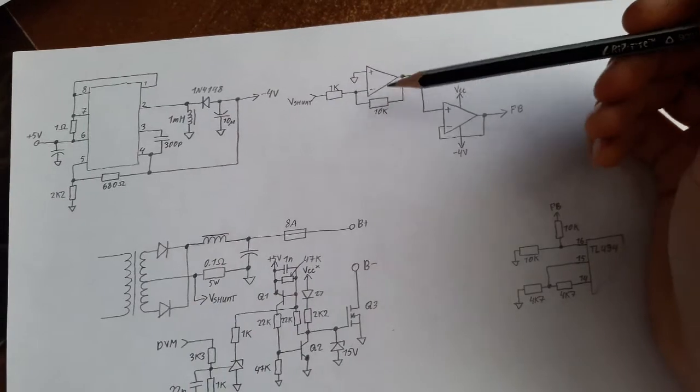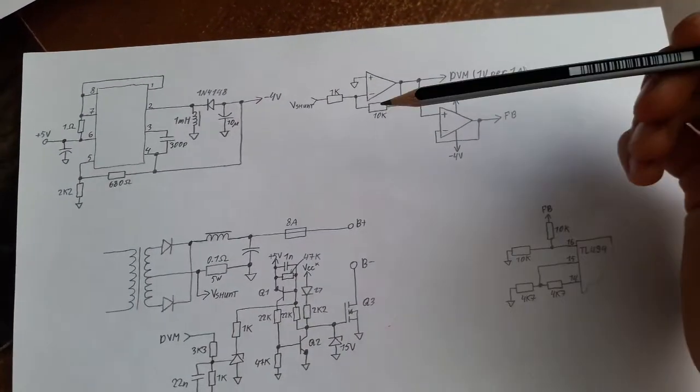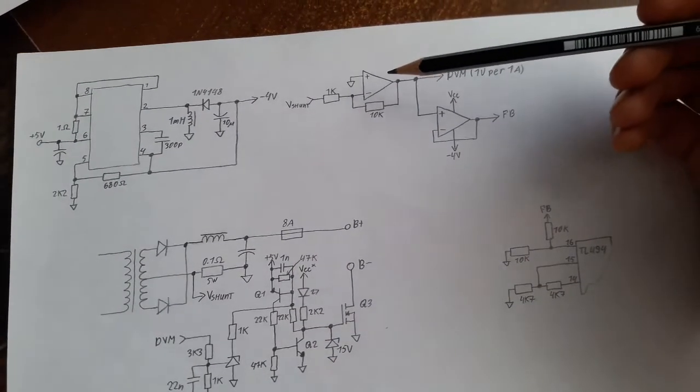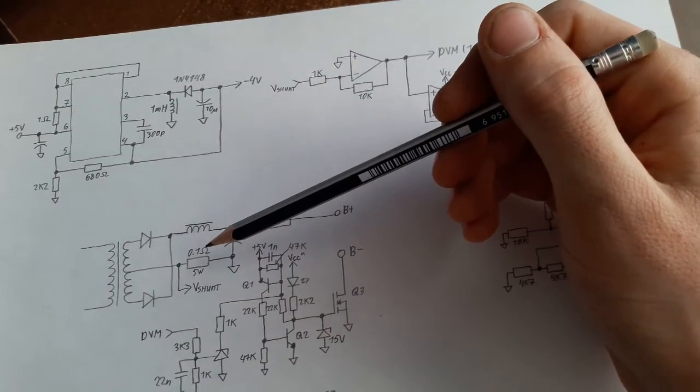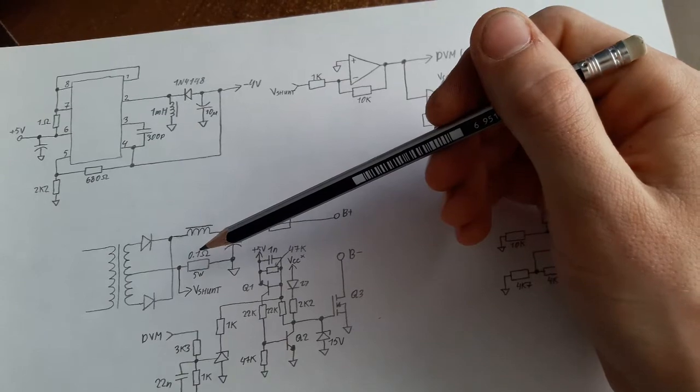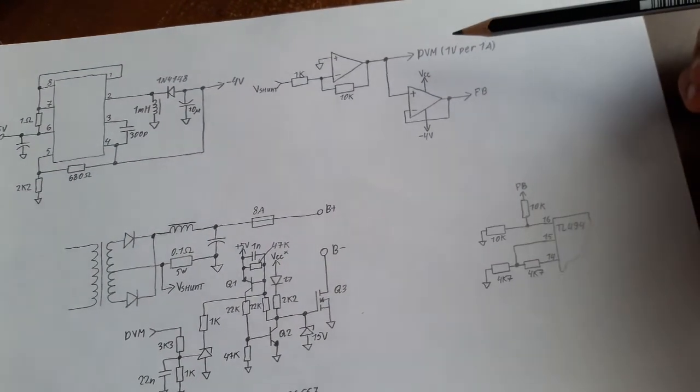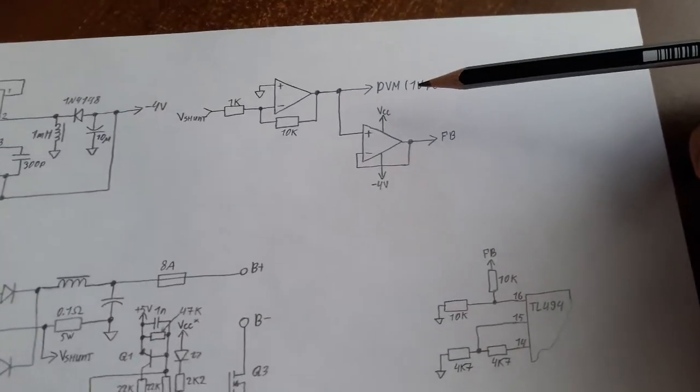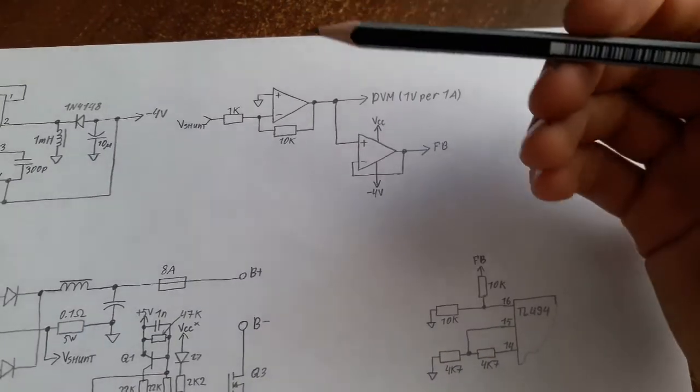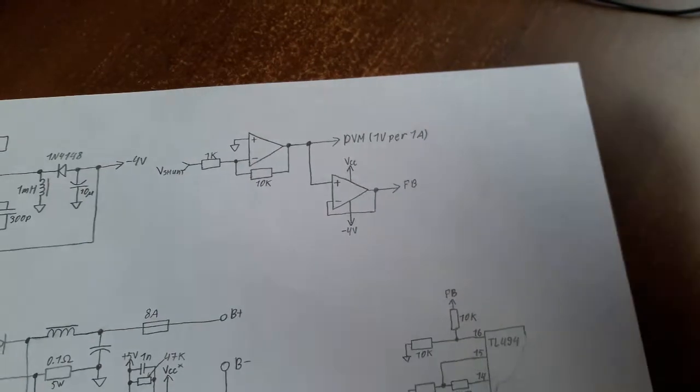So basically, very simple little inverting amplifier. You can see 0.1 ohm, 10k, 1k, 10k over 1k, that's the gain of inverting amplifier. Bam, you have 10. And then, what do you know? If you have 1 amp here, you have 0.1 volts. 1 amp times 0.1 ohms, 0.1 volts, 0.1 volts times 10, you have 1 volt. You fit it into the DVM and bam, you have 1 volt per 1 amp. The voltage that you see on the DVM now is the current. So that's how I implemented the ammeter very easily.